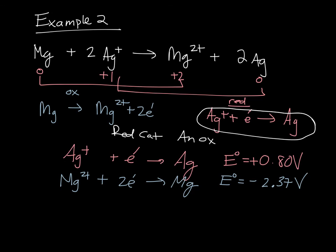Now when we do cathode minus anode, we'll end up with 0.80 minus negative 2.37, which will yield us an overall positive voltage of 3.17 volts.